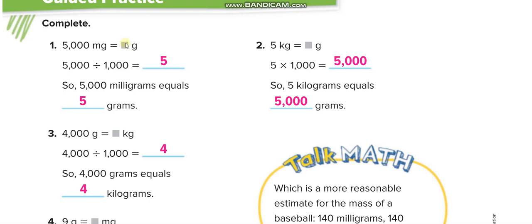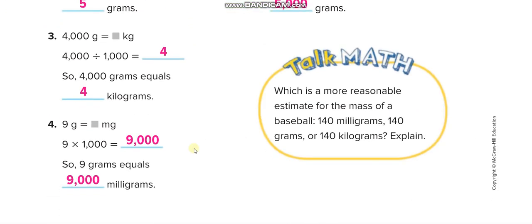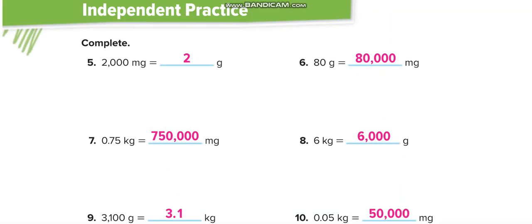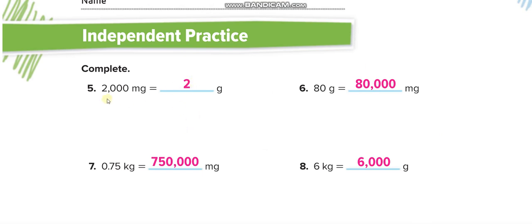Next examples: 5000 milligrams divided by 1000 equals 5 grams. 4 kilograms equals 4000 grams. 2000 milligrams divided by 1000 equals 2 grams. 80 grams multiplied by 1000 equals 80,000 milligrams.